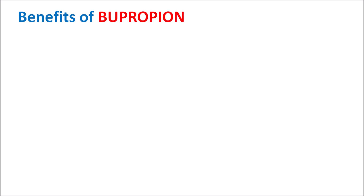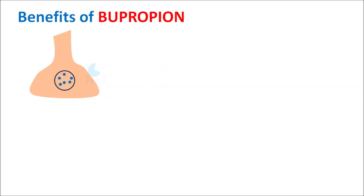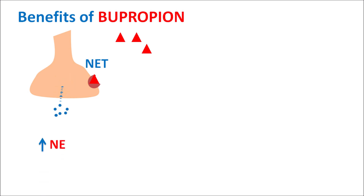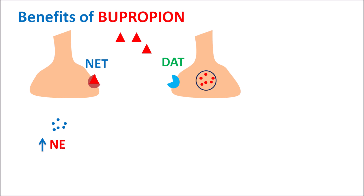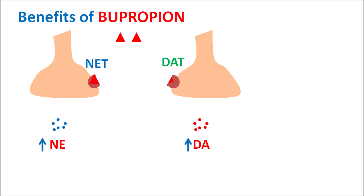Since it is an atypical antidepressant, this drug shows a somewhat different mechanism compared with typical agents. It mainly acts on norepinephrine neurons, where it can act on the norepinephrine transporter — bupropion inhibits this transporter so that it inhibits the reuptake of norepinephrine, which increases norepinephrine levels within the CNS. Similarly, this drug can also act on dopaminergic neurons and block the dopamine transporter, increasing dopaminergic transmission. By increasing both norepinephrine and dopamine levels within the CNS, this drug can reduce the symptoms of depression.